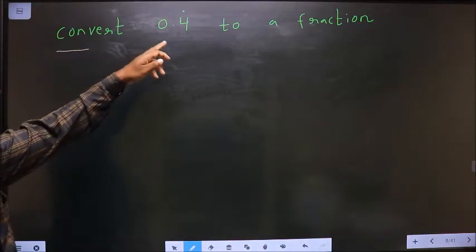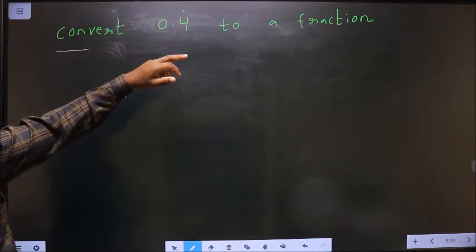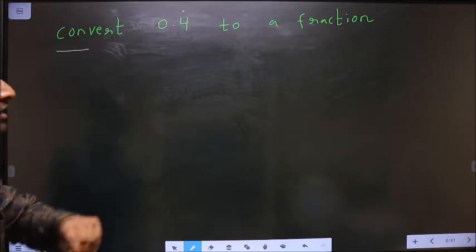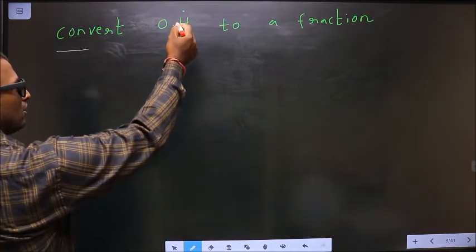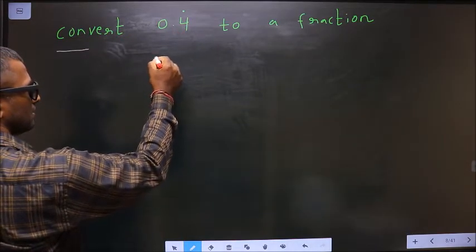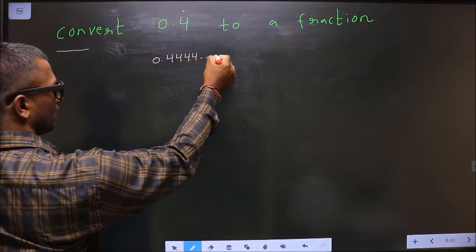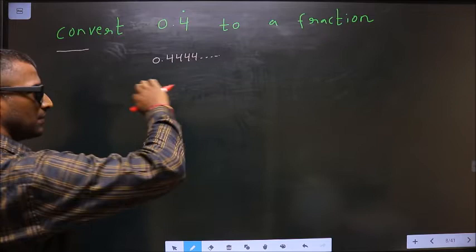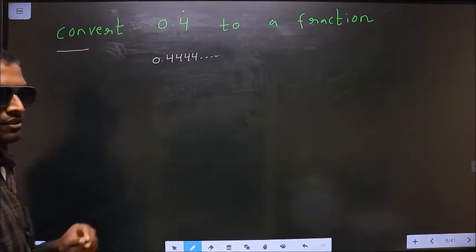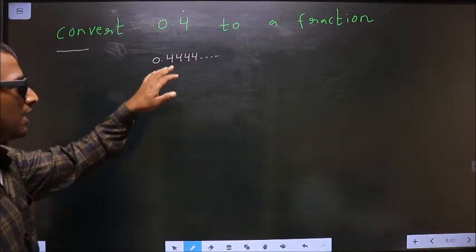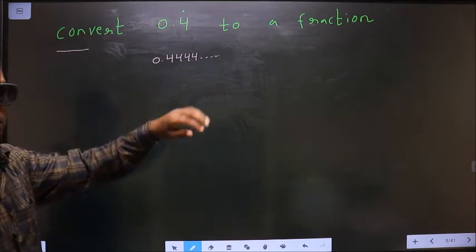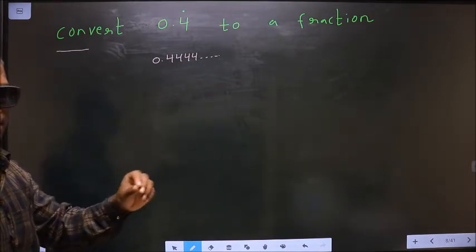Convert 0.4 with the 4 repeating to a fraction. The dot on 4 means the number 4 has been repeating. Now how do I convert this recurring decimal to a fraction? We follow this method.